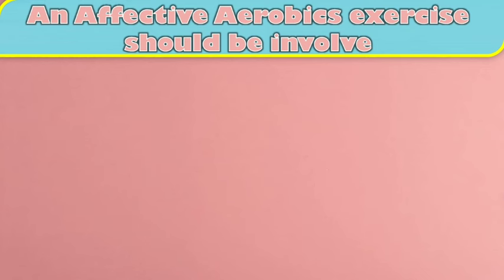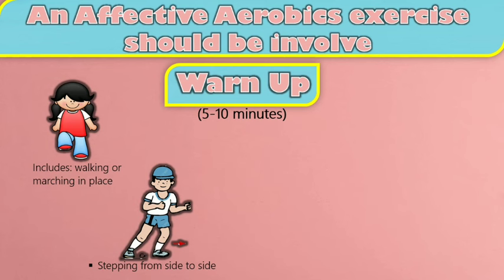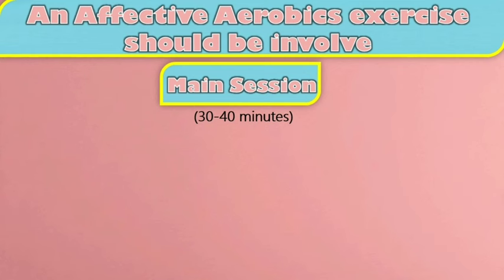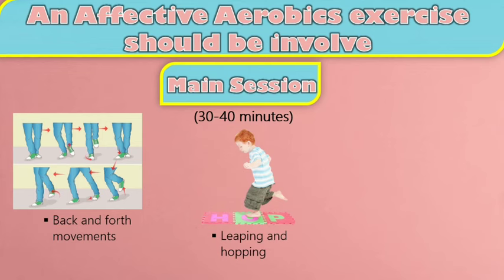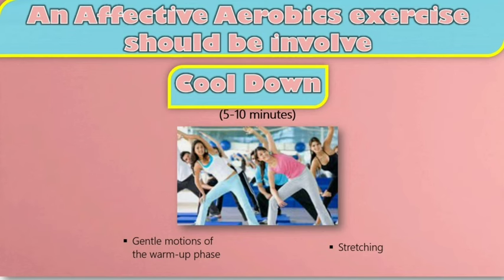An effective aerobics exercise should involve: 1. Warm-up aerobic exercises, 5 to 10 minutes — includes walking or marching in place, stepping from side to side, moving the arms at waist level or higher, and a gentle stretch of each of the major muscle groups. 2. Cardiovascular aerobic exercise, 30 to 40 minutes — includes back and forth movements, leaping and hopping, and dance moves. 3. Cool down aerobic exercises, 5 to 10 minutes — gentle motions of the warm-up phase and stretching.